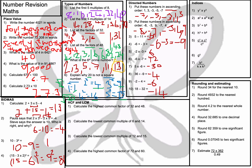We will now look at indices. Question 1: simplify y⁷ × y³. When I have the same base and I multiply, I just add the powers, so 7 plus 3 is 10, and the answer is y¹⁰. Question 2: a² × a⁵ × a³. Adding the powers: 2 plus 5 plus 3 equals 10, so the answer is a¹⁰.